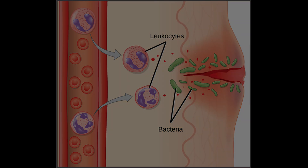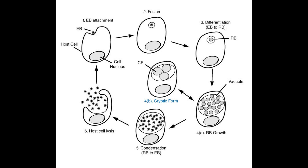The pathogen then duplicates within the cell and is encompassed by a vacuole. The pathogen then has two options: it can either lyse the cell so all the new pathogens are released as EBs for further invasion, or it can make the cell cryptic. In this cryptic form, the RBs grow and essentially take over the host cell's activity to break down the epithelial lining of the cell's environment.